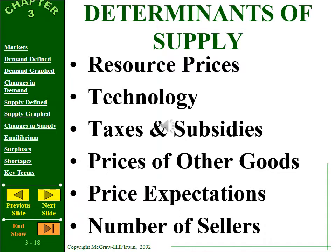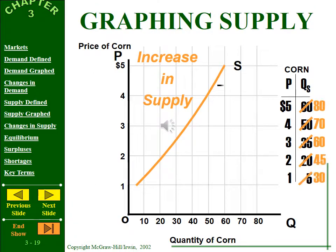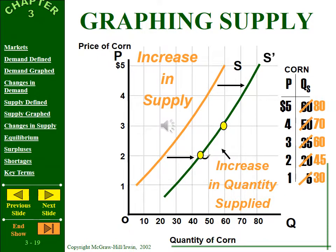Prices of related goods and expectations also affect supply. If a farmer thinks the price of corn will rise, they'll plant more now. But if wheat prices look more profitable, they may shift fields from corn to wheat, reducing corn supply. As the number of sellers increases, supply increases. An increase in supply shifts the curve right, decreasing price and increasing quantity at equilibrium; a decrease shifts it left, raising price and lowering quantity.